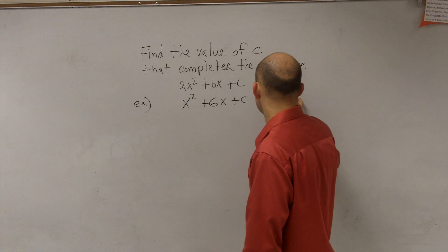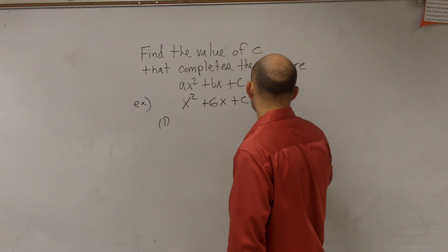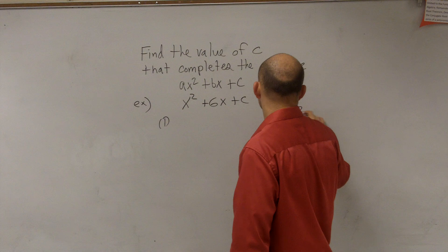You're going to take b. So let's write step one. You're going to take b divided by 2 and square it.